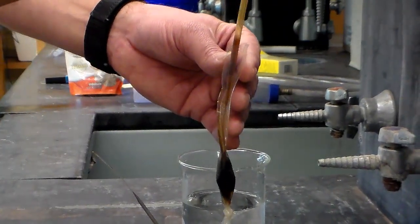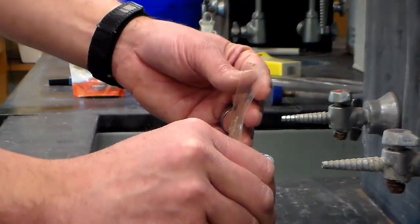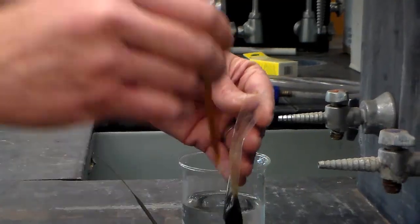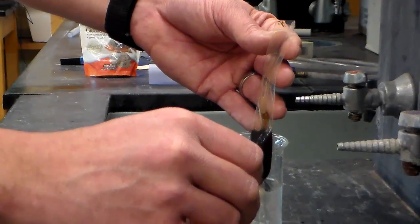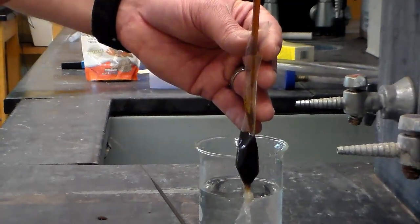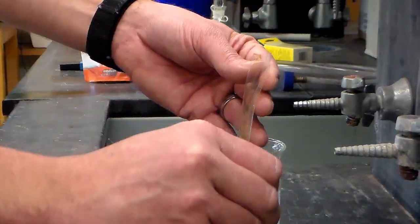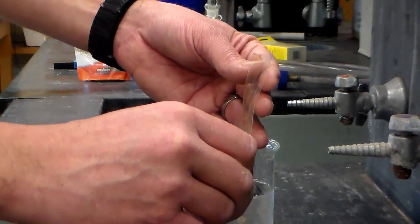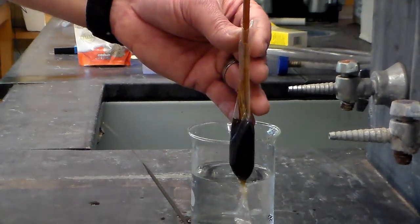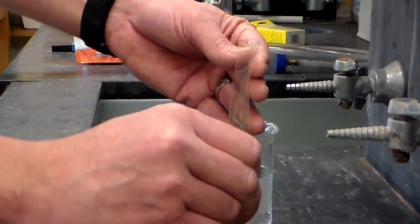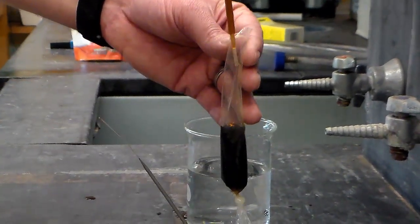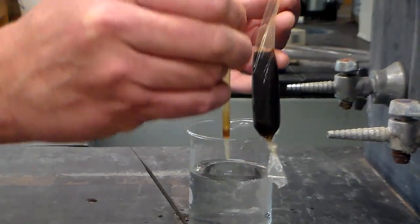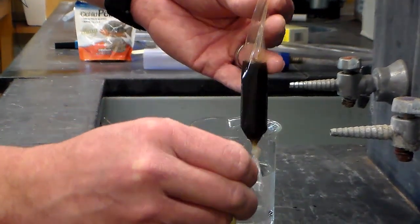...into the dialysis tube. Everyone asks how many mils and I don't have an exact answer, but you want to get it about half full. We don't need it to be completely full until it's bursting, and that looks pretty good right there.